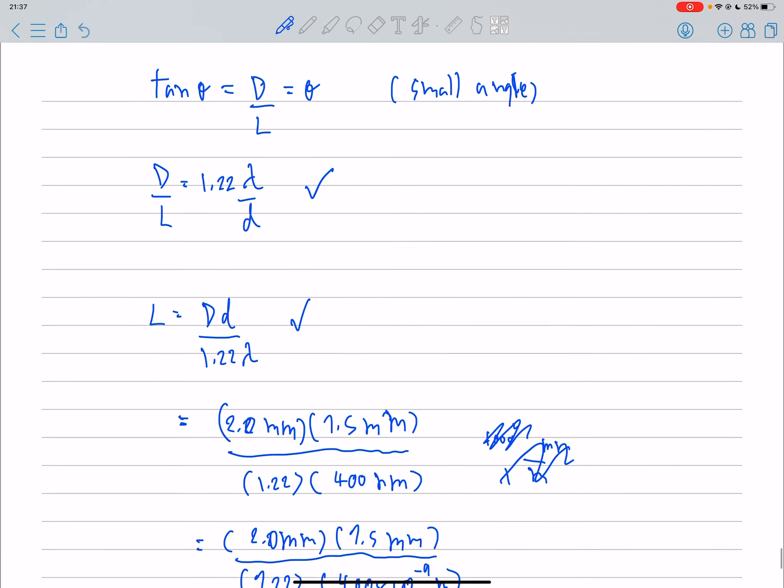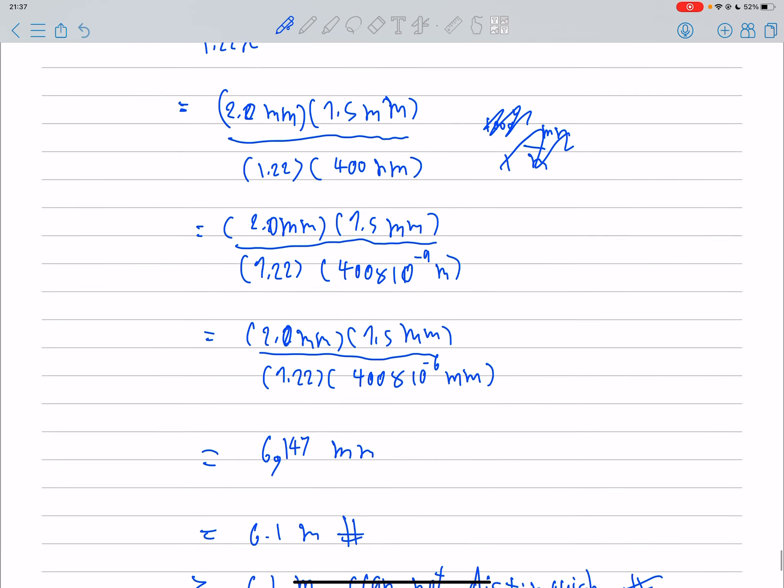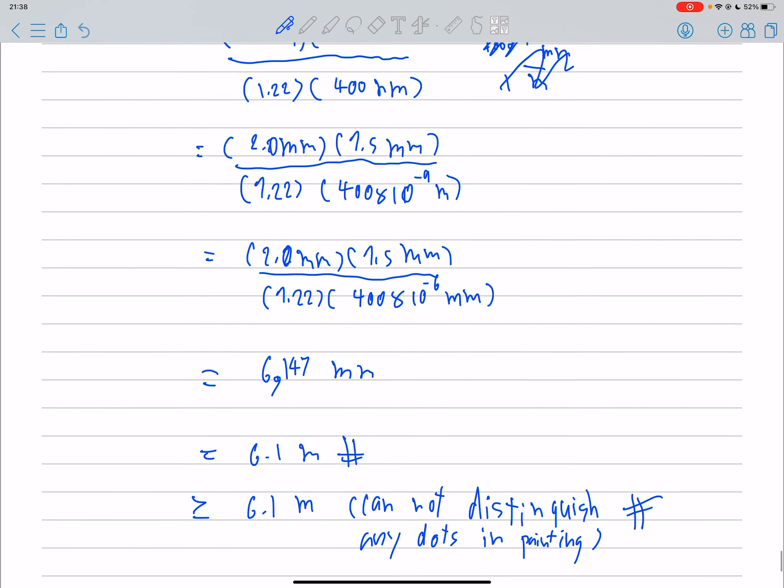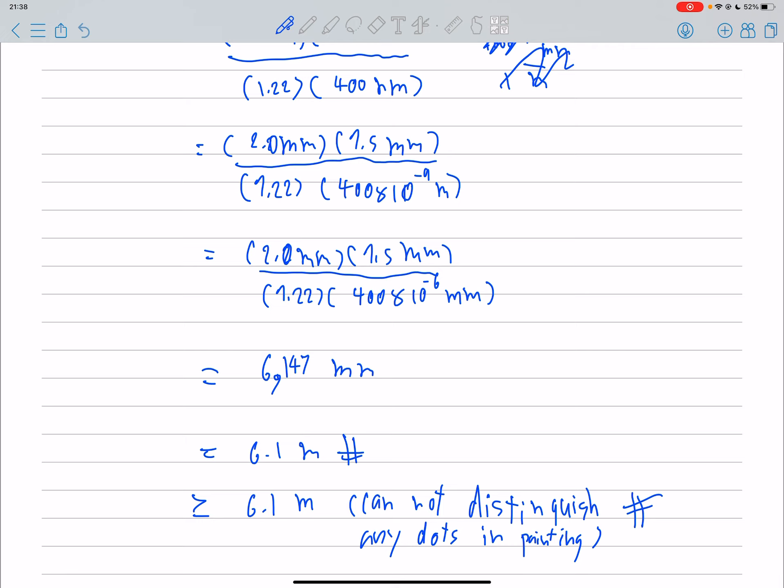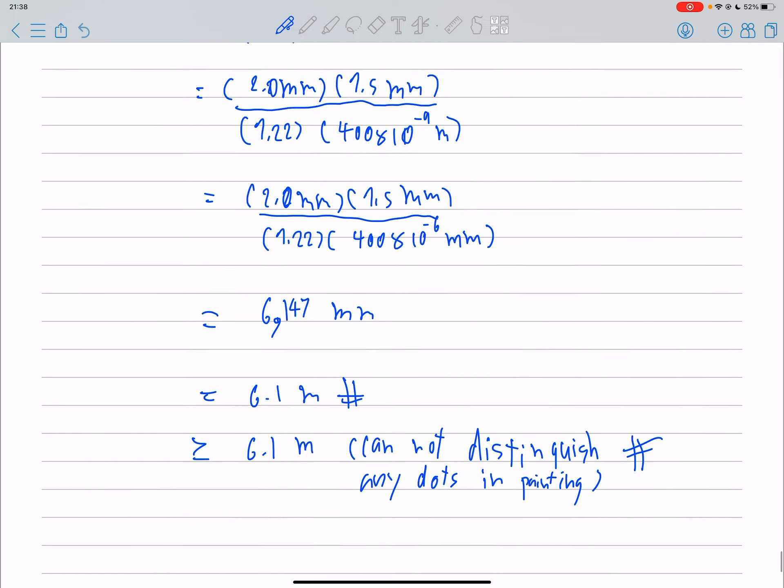So we have to find L. L equals to about 6.1 meters. So we have to stand at a distance equal or longer than 6.1 meters to see the picture so that we cannot distinguish any dots in painting.